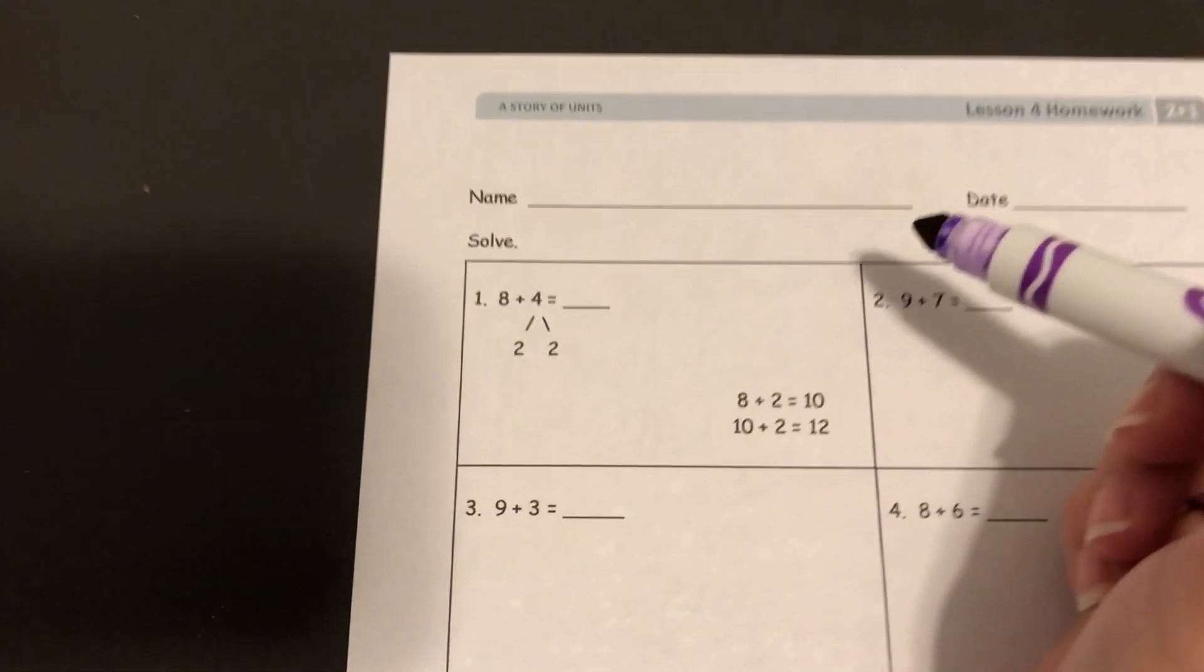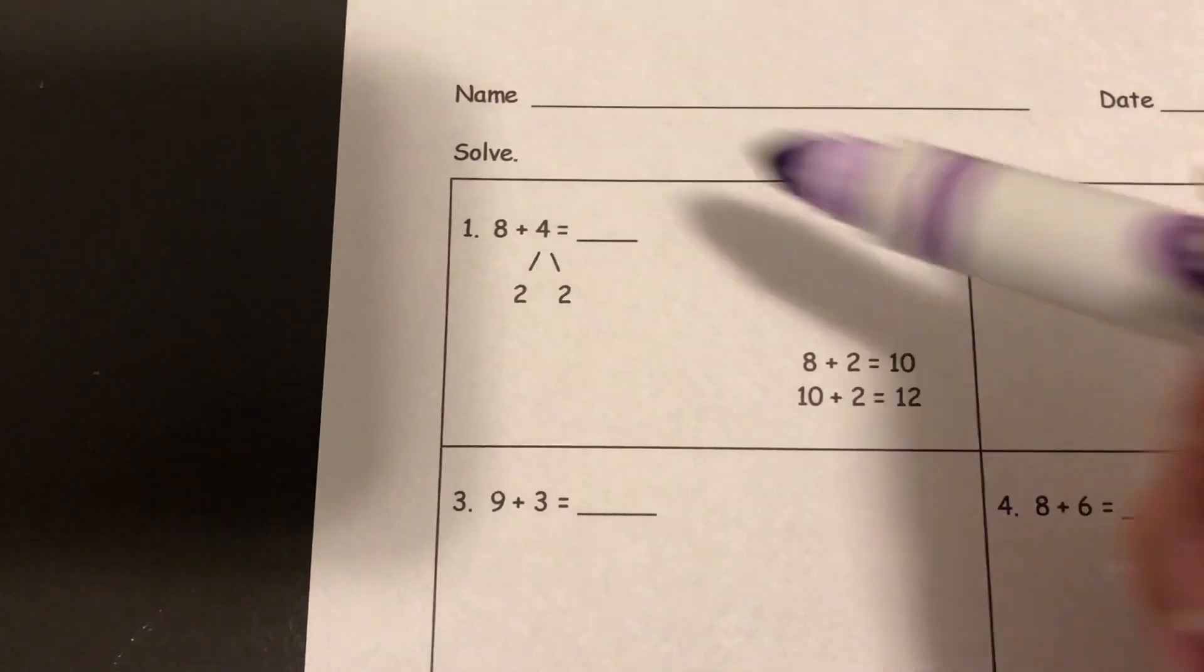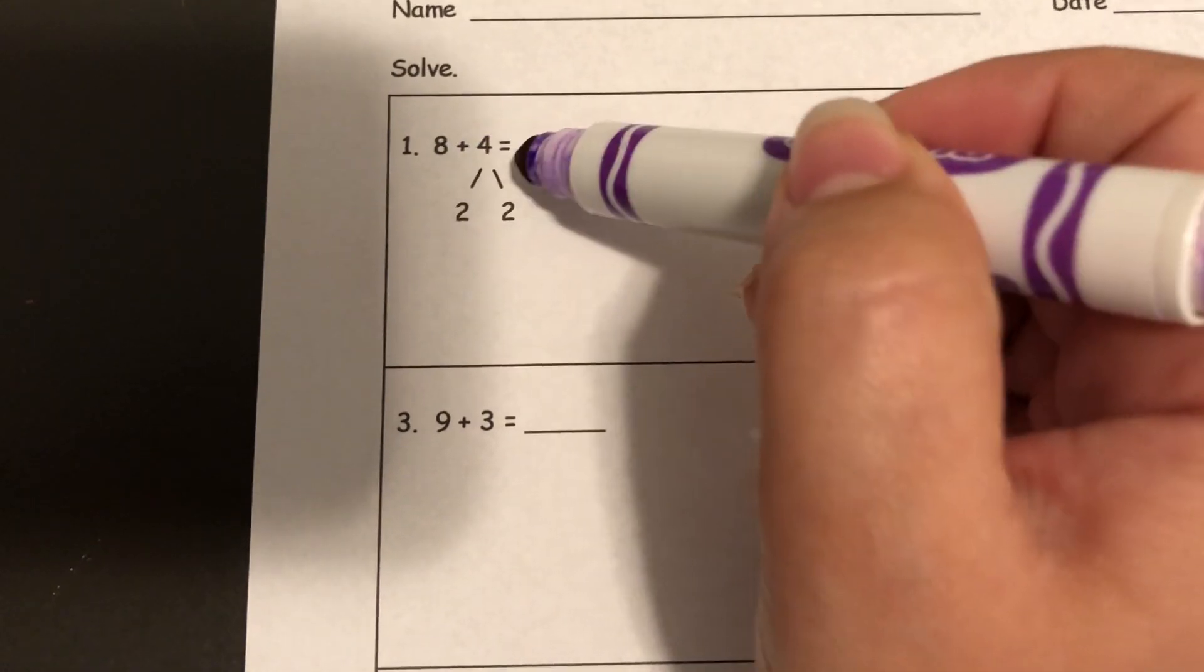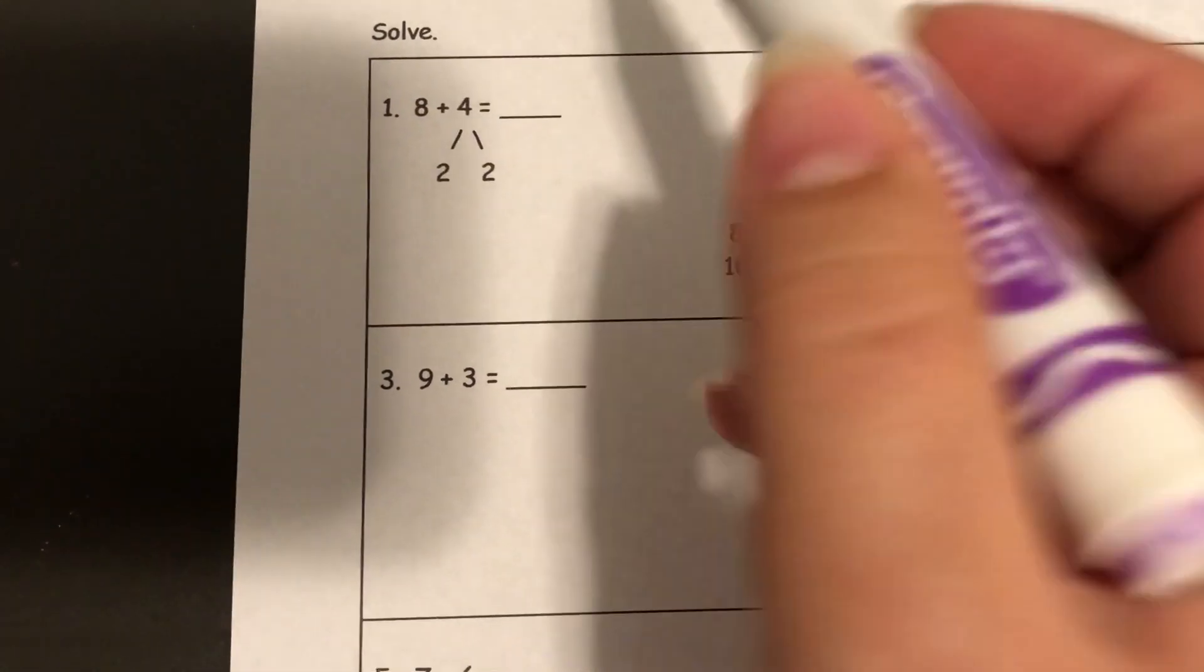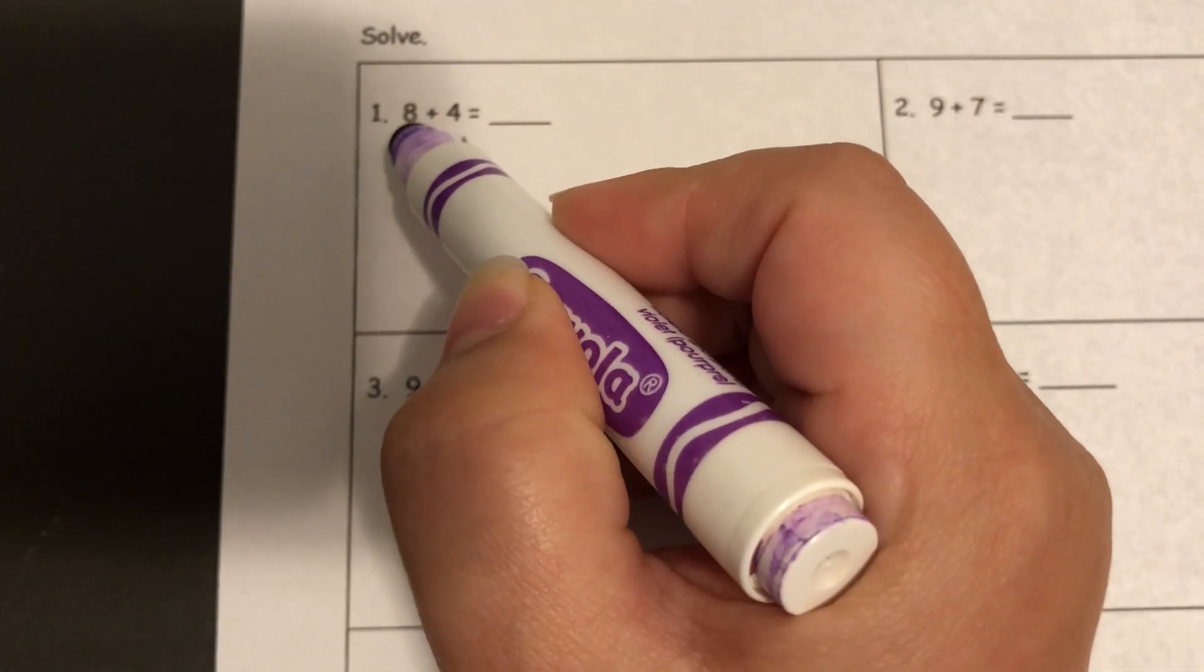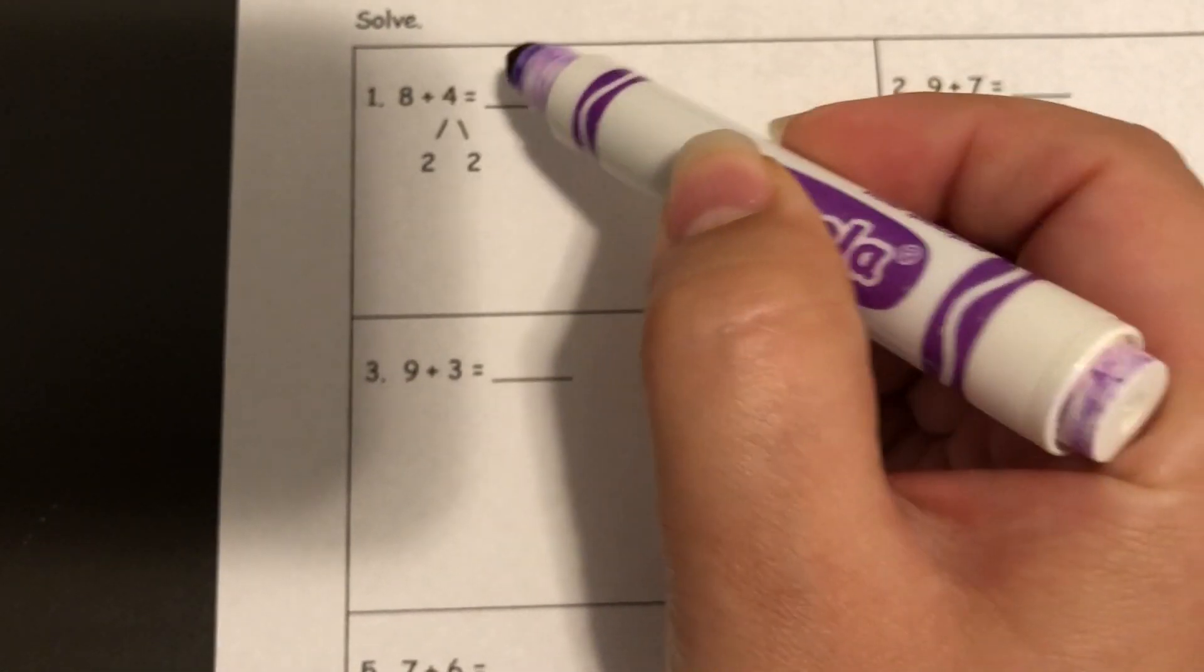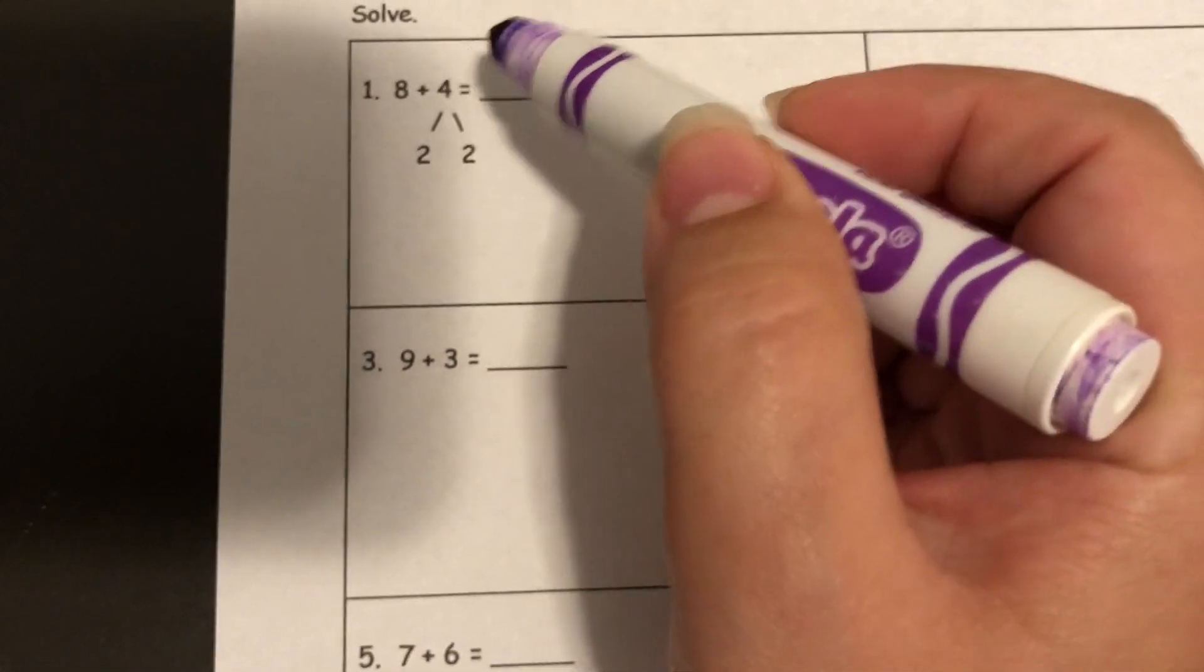If you look at problem number one, they've already started it for you. So they looked at 8 plus 4 and said, okay, well 8 is really close to a 10. What do I need to add to 8 to make it 10? Well, it's a 2.